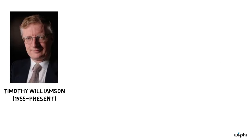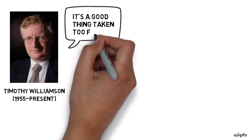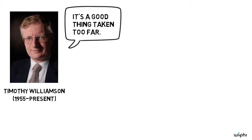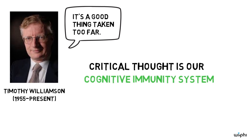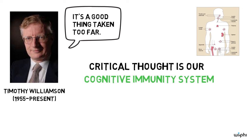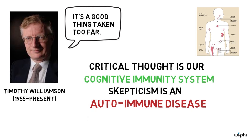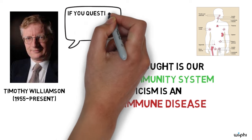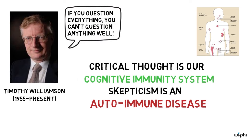Timothy Williamson suggests that skepticism can seem appealing because it's anchored in a generally helpful ability of ours. Our ability to suspend judgment and double-check our thinking on any given point is like a cognitive immunity system — it can increase our confidence in things we've figured out well, while helping us purge inconsistencies and mistakes. Skepticism, in his view, is like an autoimmune disease in which this good thing is carried too far and ends up destroying itself. If we suspend judgment on too many points all at once, then we won't have the resources we need to figure out what's worth holding on to.